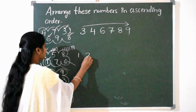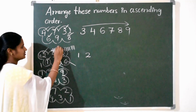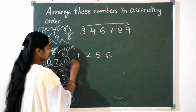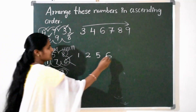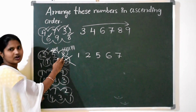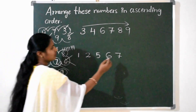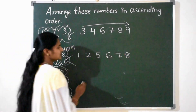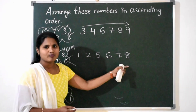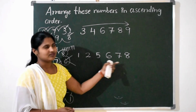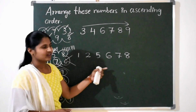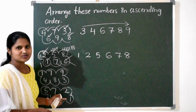Next which number comes? Very good — 2. Next, 5. Very good — 6. Then 7. Next we have one more number: 8. So we have arranged the numbers from smallest to biggest. This is called Ascending Order.